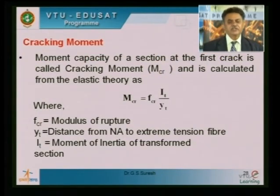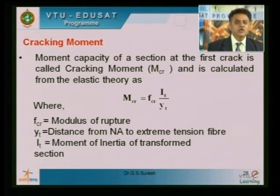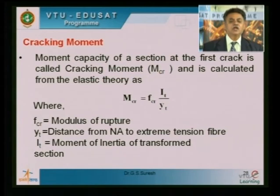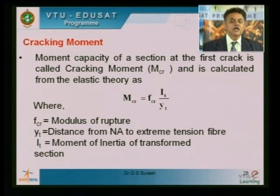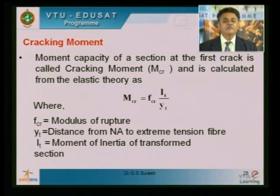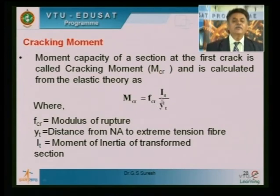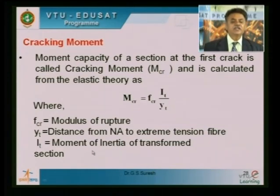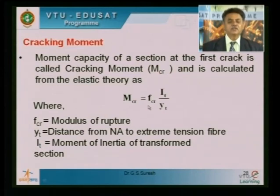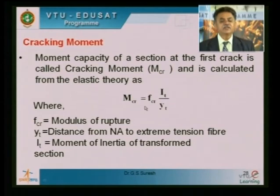In the initial stage before the concrete cracks, the cracking moment MCR is calculated using the elastic formula MCR equals FCR times I divided by y, where I and yt are the moment of inertia and distance to the extreme fiber. FCR is the modulus of rupture, equal to 0.7 times the square root of FCK as per IS 456.